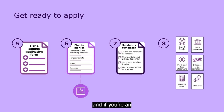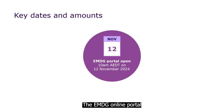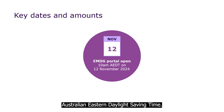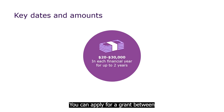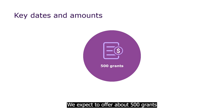And if you're an SME that operates as a trust, you'll need your trust deed and any amendments if that applies to you. The EMDG online portal will open for applications on November 12, 2024 at 10am Australian Eastern Daylight Saving Time. You can apply for a grant between $20,000 and $30,000 in each financial year for up to two years. We expect to offer about 500 grants in Tier 1.